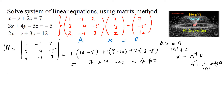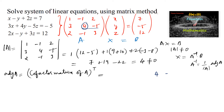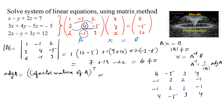Now let's find the adjoint. The adjoint of matrix A equals the transpose of the cofactor matrix of A. We find the cofactor matrix using a shortcut: from the second row second column — 4, negative 5, then 3 and 4; third row — negative 1, 3, 2 and negative 1; first row — negative 1, 2, 1 and negative 1; and second row again — 4, negative 5, 3 and 4. Now let's find the determinants.